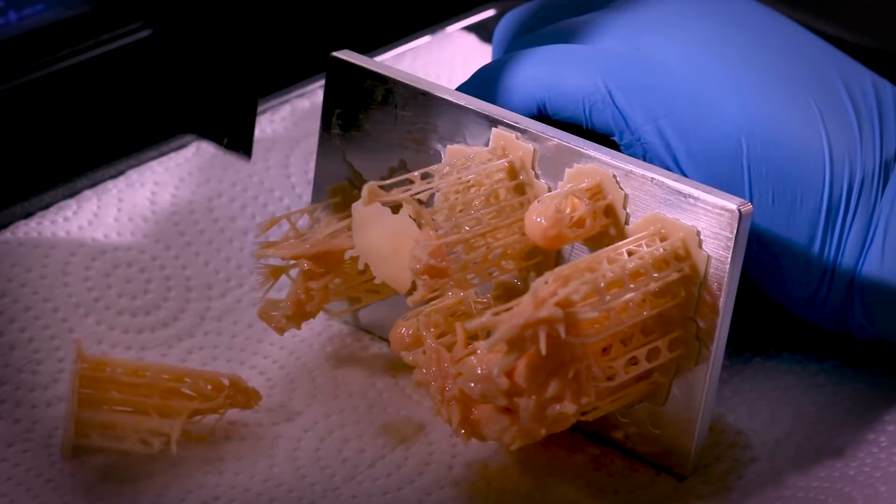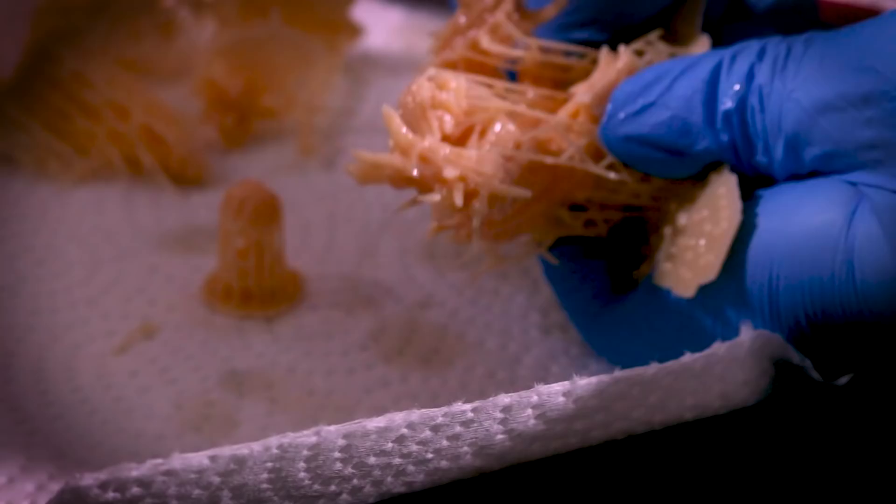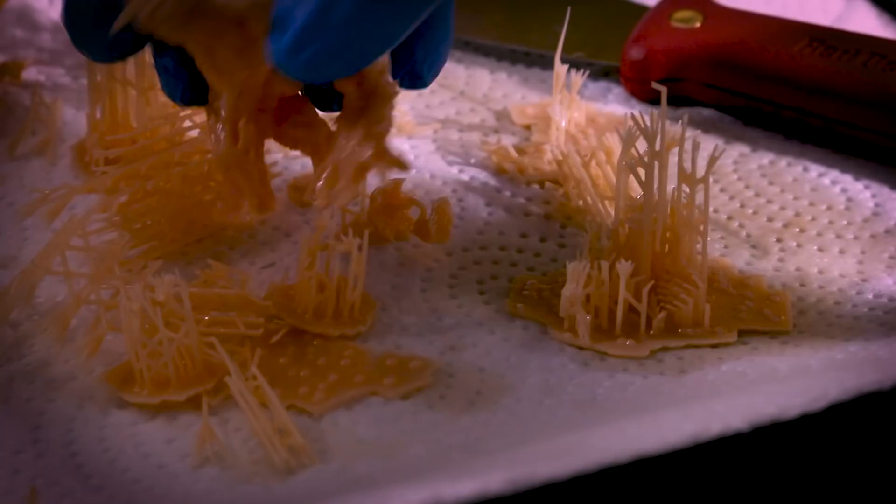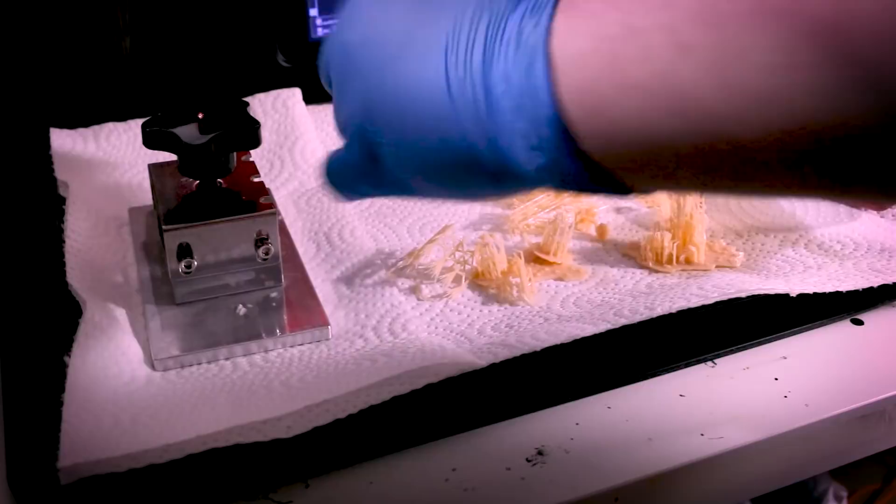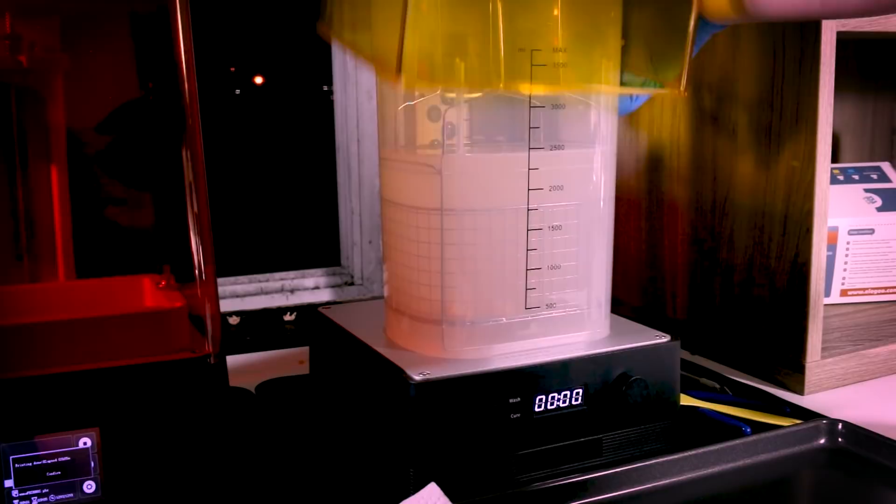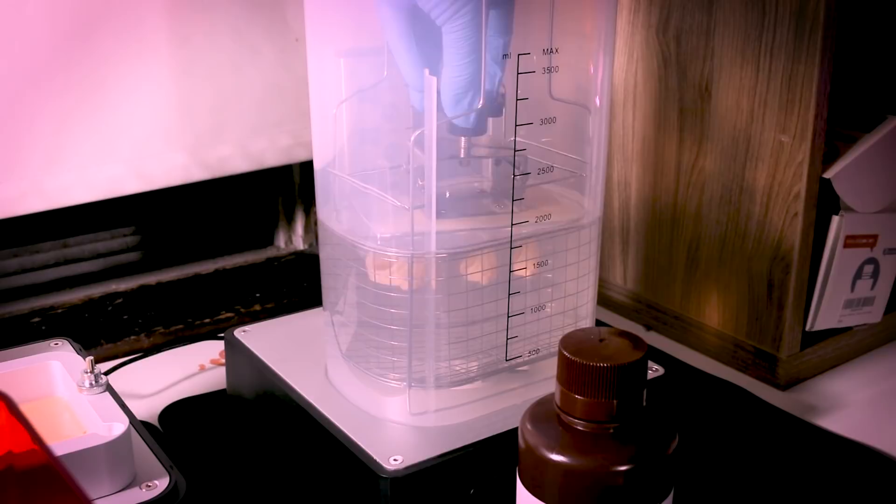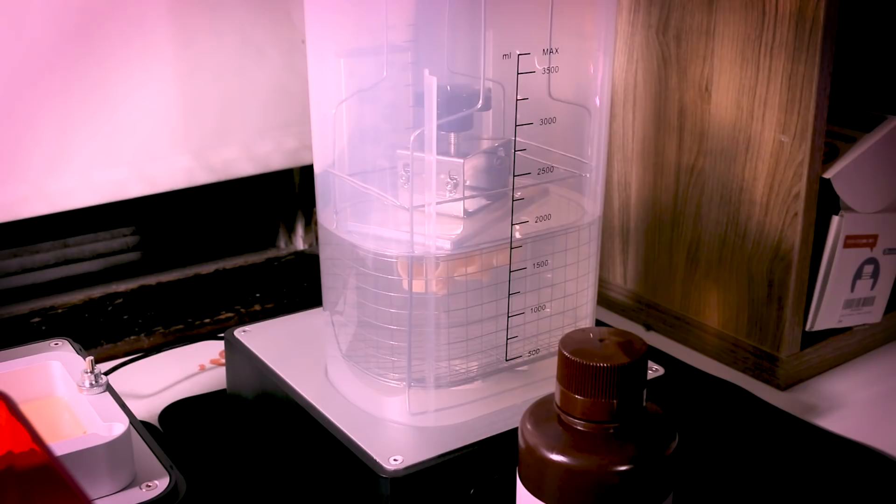Once our printing is done, we can remove the prints from the printing bed using our metal scraper. And because they're all still soft, we can just rip off the supports with our fingers. We can then put everything into the basket of the washing machine and just let it wash for a few minutes.